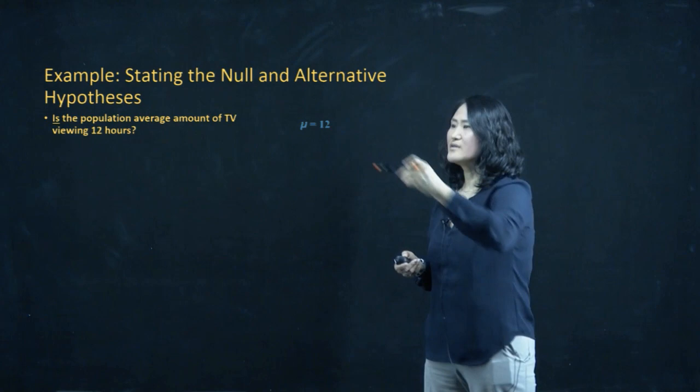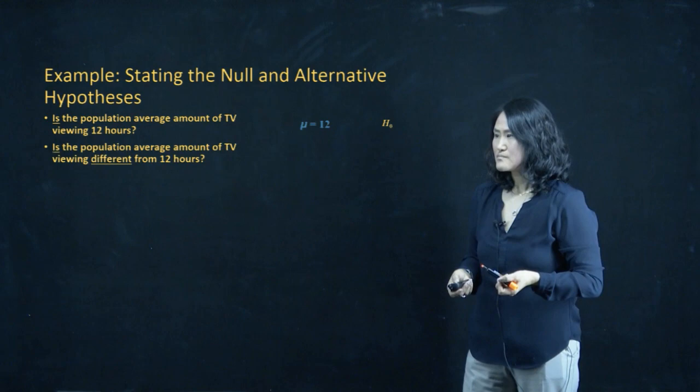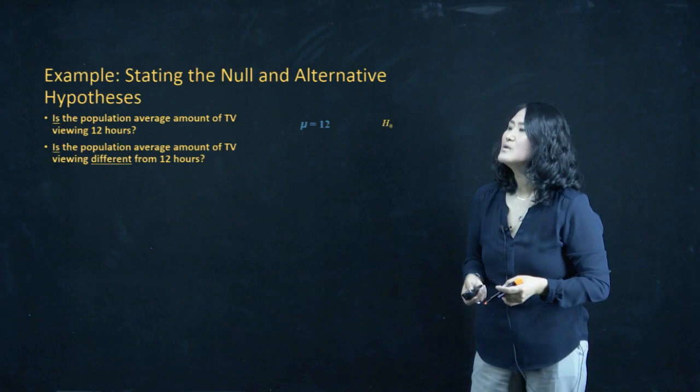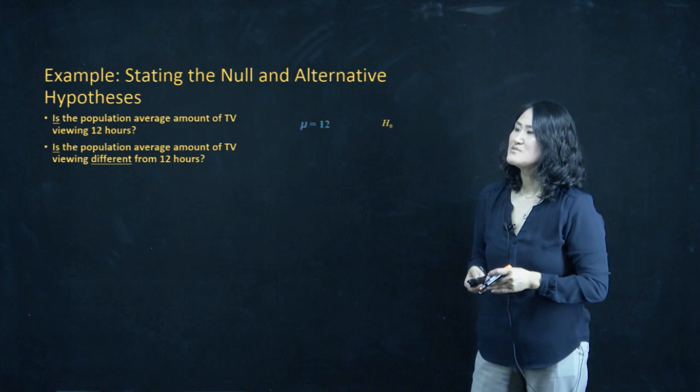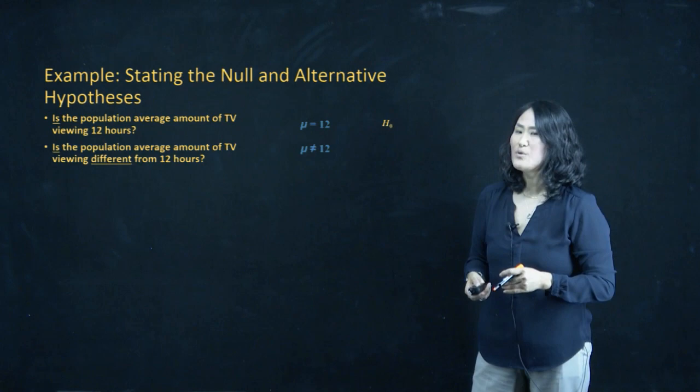The next example: the population average amount of TV viewing differs from 12 hours. Again, mu and 12 hours are the same, but now the symbol in the hypothesis changes — it's not equals. Because there is no equality sign, this one goes to H1, the alternative.